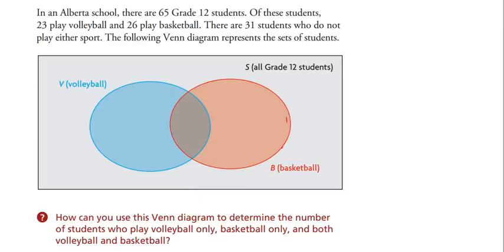The first number to write is 31, outside the circles, representing those who play neither sport. Now, how many people are left to account for? 65 minus 31 is 34.